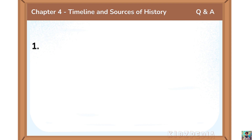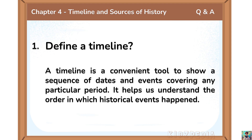Question number 1. Define a Timeline. A timeline is a convenient tool to show a sequence of dates and events covering any particular period. It helps us understand the order in which historical events happened.